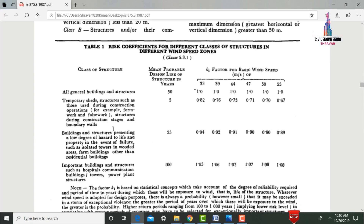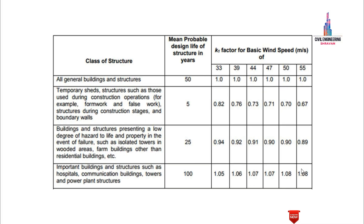K1 is the risk coefficient factor, whose value is taken from the table provided in IS 875 code — Table 1: Risk Coefficient Factor for different classes of structures at different wind speeds. It consists of class of structure, mean probable design life in years, and K1 factor for basic wind speeds of 33, 39, 44, 47, 50, and 55 m/s. For all general building structures, we consider a design life of 50 years, giving a K1 factor of 1.0.